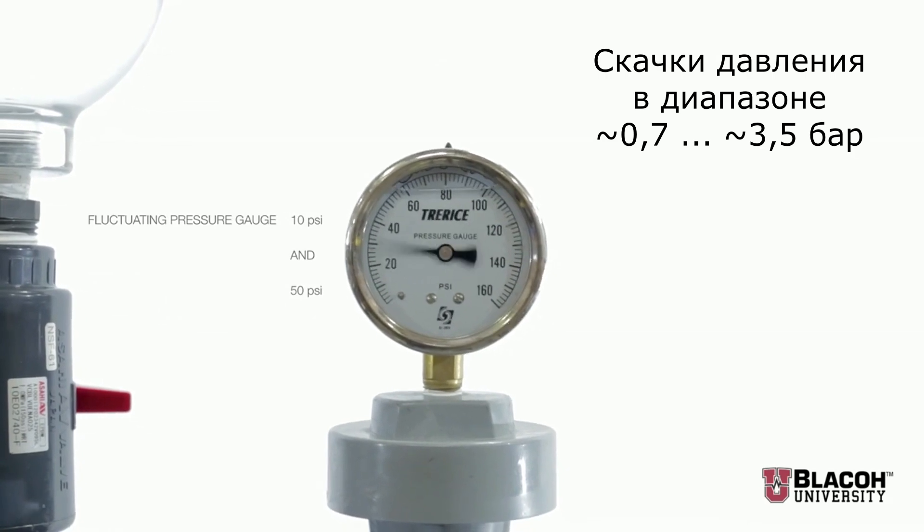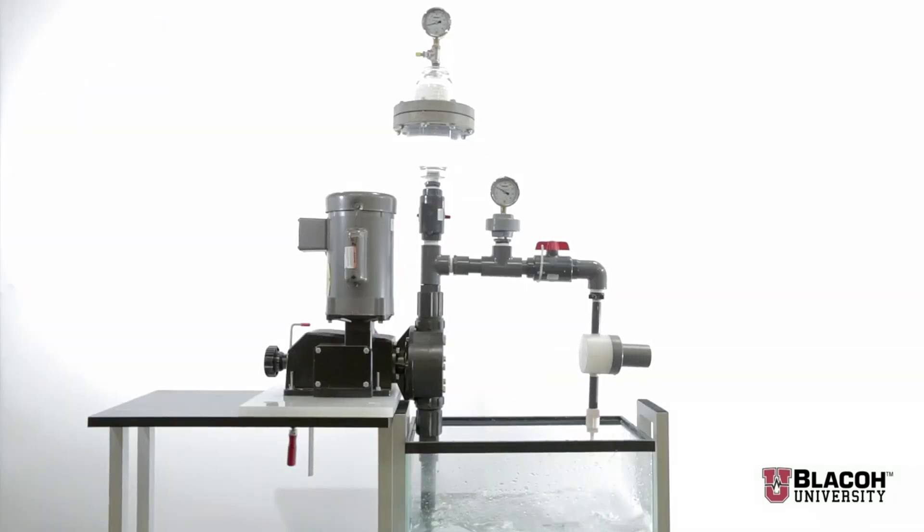The metering pump discharges a very small volume of liquid per stroke. That small fluid volume must re-accelerate the fluid in the piping and in doing so creates almost a water hammer spike.